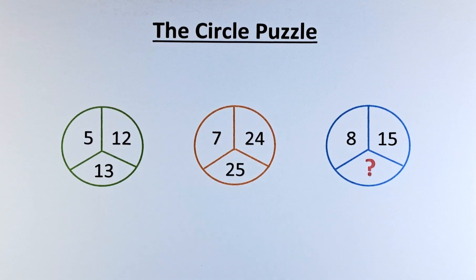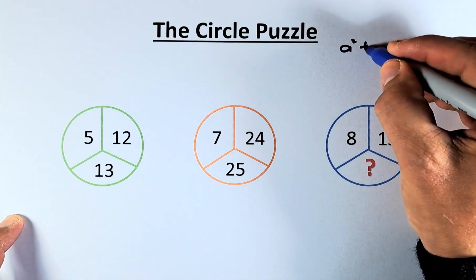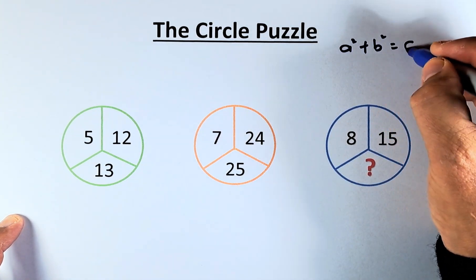This is a Pythagorean triplet, where the formula is a² + b² = c².